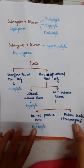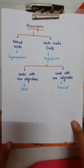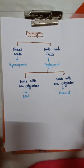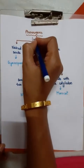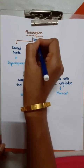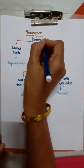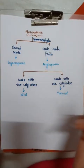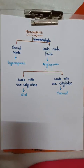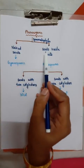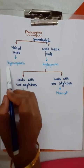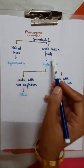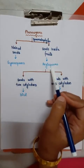So the four divisions are: Thallophyta, Bryophyta, Pteridophyta, and Spermatophyta. Spermatophyta is a division that is further divided into two subdivisions: those that have naked seeds, which are Gymnosperms, and those that have seeds inside fruits, which are Angiosperms.